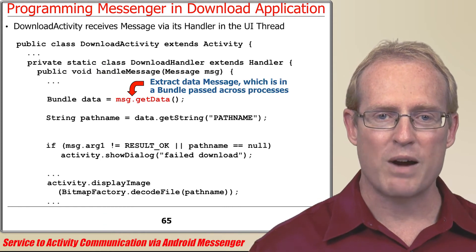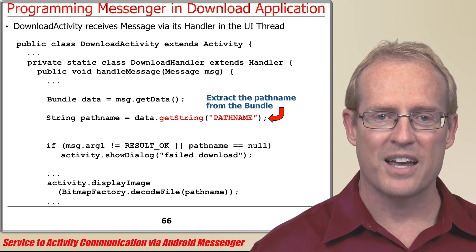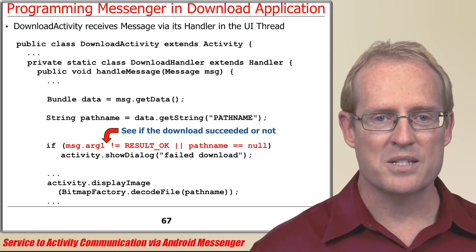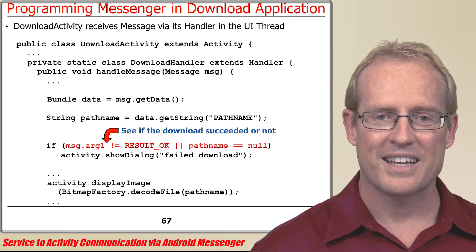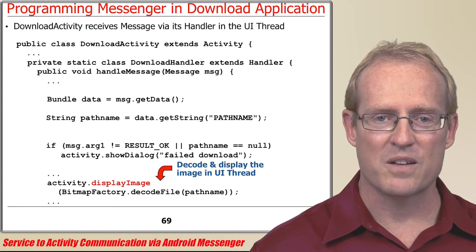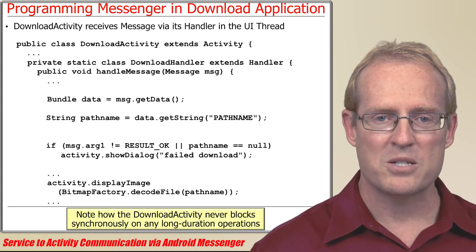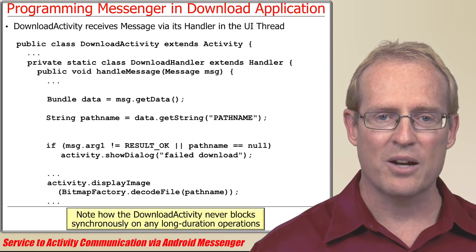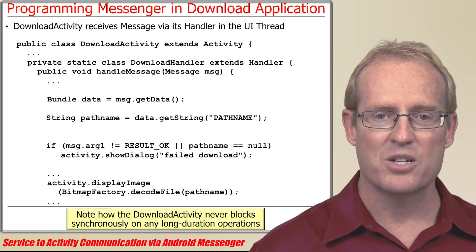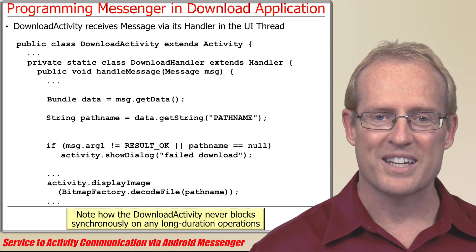This method extracts the bundle from the message and uses it to obtain the encapsulated file name. A check is then made to see if the download succeeded. If it did, the image file is decoded and the resulting image is displayed in the context of the user interface thread. Note how the use of started services, intents, Messengers, and handlers enables the download activity to retrieve and display an image without performing any long-duration operations that would block the user interface thread synchronously.